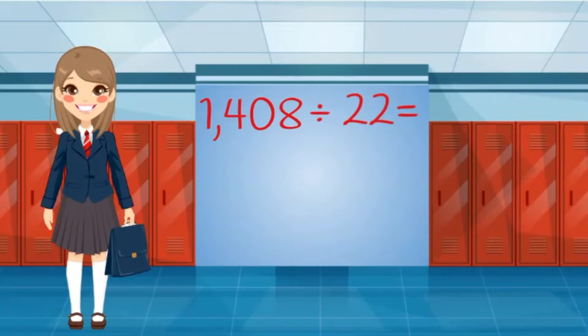I can round the numbers to make them easier to divide. I want to round to values I know will divide evenly. I look at the numbers and notice that 14 is divisible by 2. Since 1408 is close to 1400, I will round to that value.